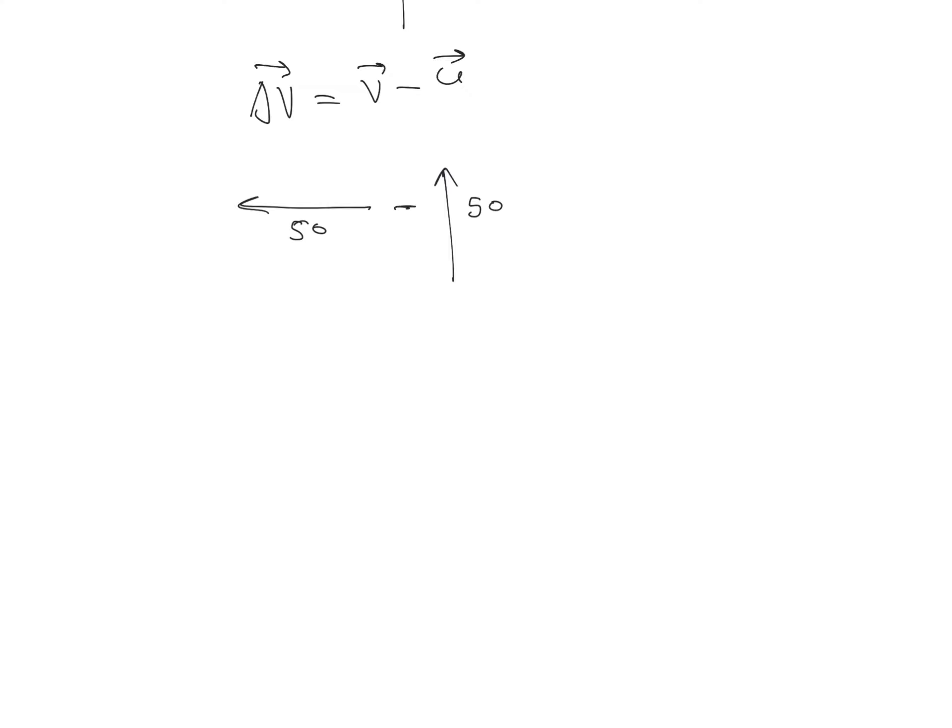So we can say that this is equal to, you know that final velocity, A vector minus B vector is A vector plus minus of B vector. We need to just reverse its direction and we need to add it. So we can go for a triangle of addition.